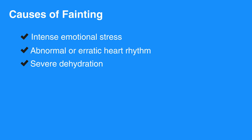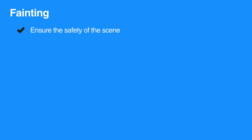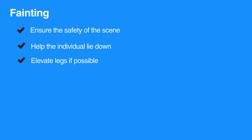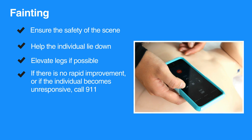For additional care for a fainting individual, do the following: ensure the safety of the scene, help the individual lie down, and elevate their legs if possible. If there is no rapid improvement or the individual becomes unresponsive, call 911.